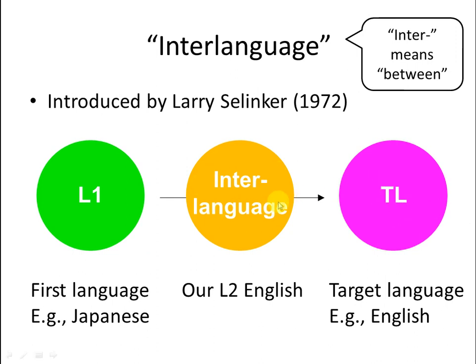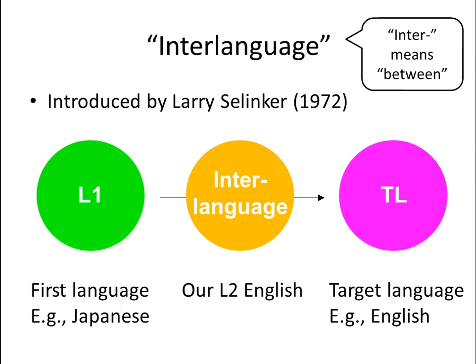My interlanguage is here between my mother tongue, Japanese, and the target language, English. My interlanguage is different from my first language, but it's also different from my target language, because my English is different from native English speakers' English. As our second language learning proceeds, our interlanguage approaches the target language — it gets better and better and approaches the target language.